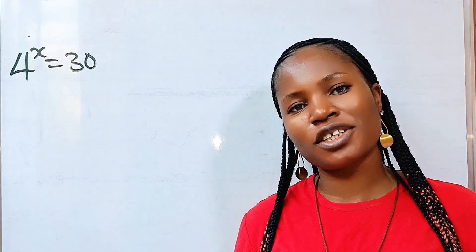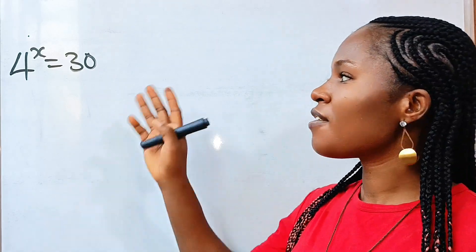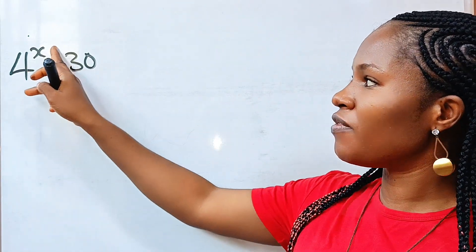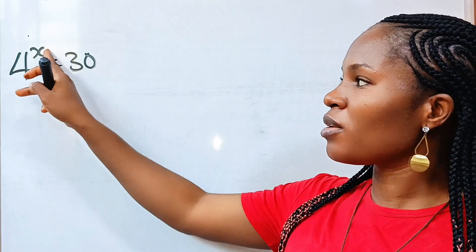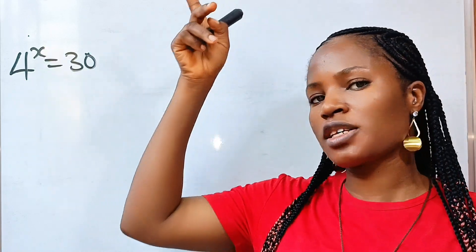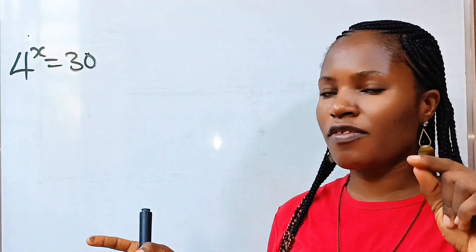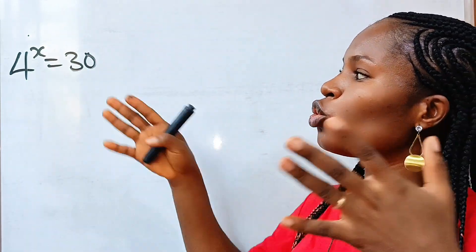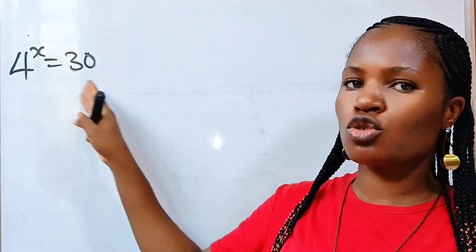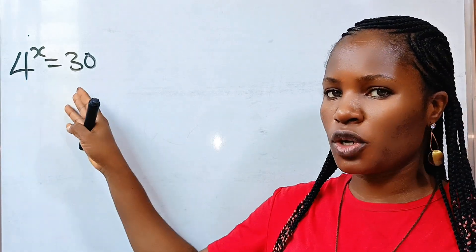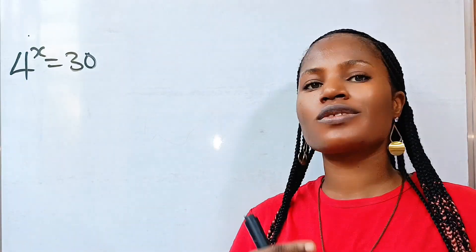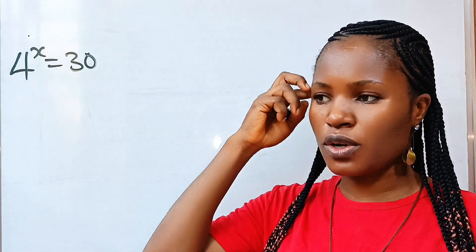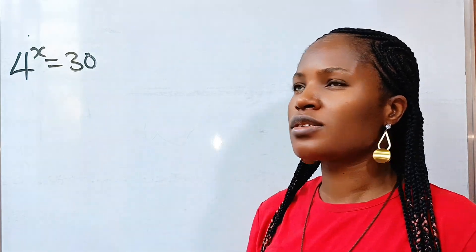Hi, welcome back to my channel. Let's find the value of x. Because x is our exponent, the only way to find its value is to introduce log — or natural log — to both sides of the equation.